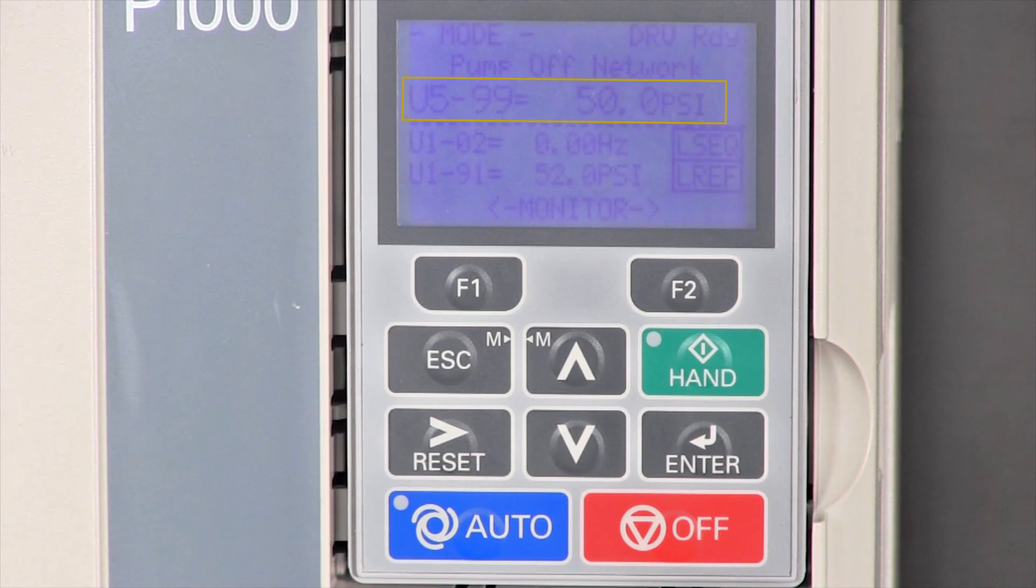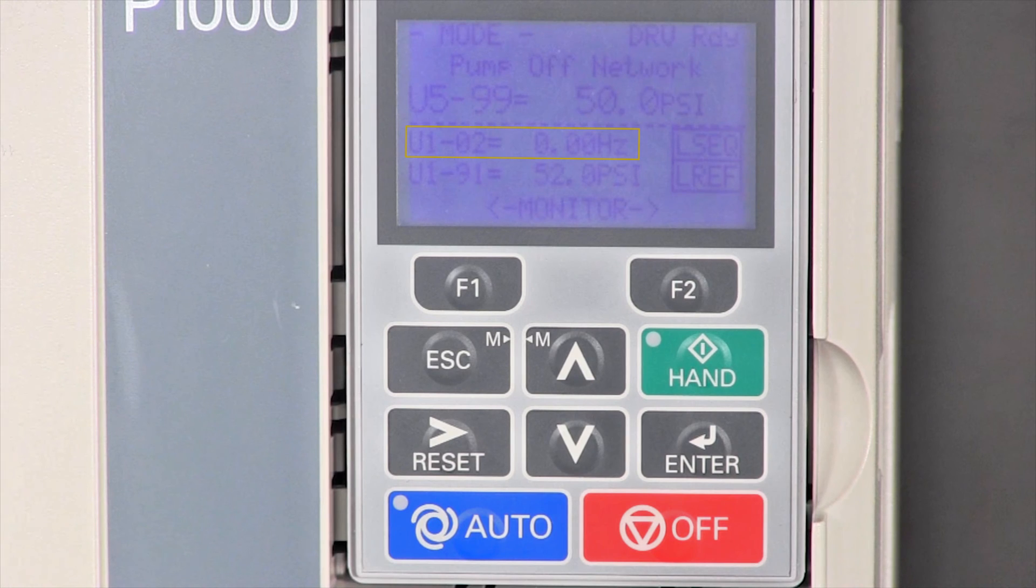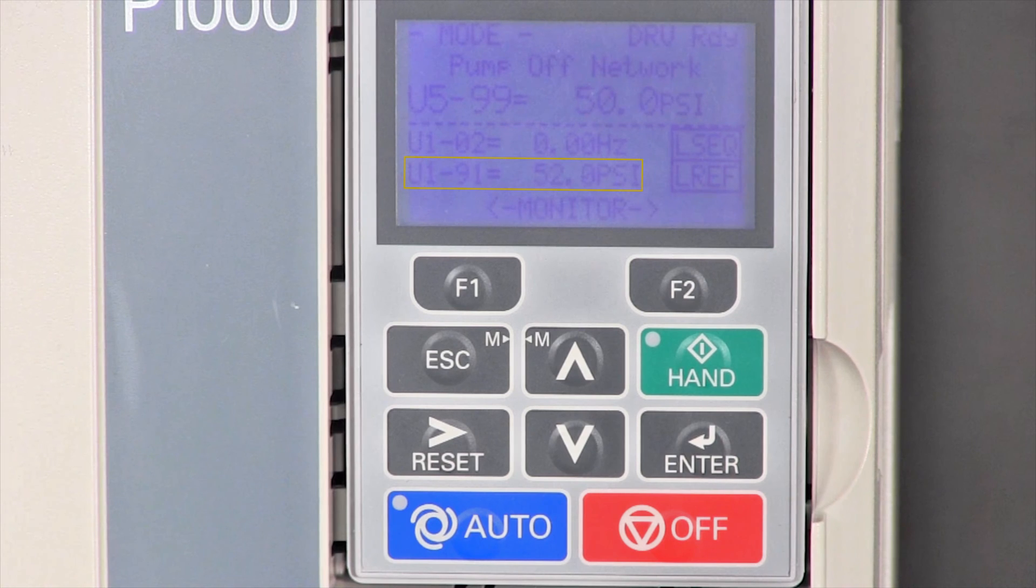The U102 output frequency, this is the speed the pump is turning in Hertz. And the U191 pressure feedback, this is the actual system pressure as measured by the pressure transducer.